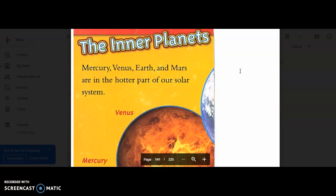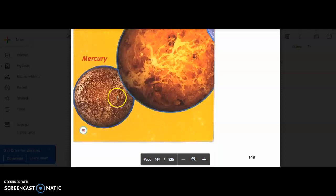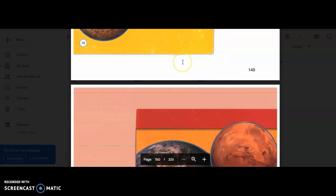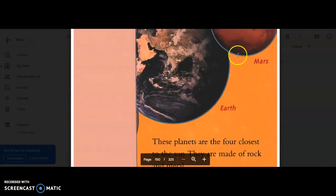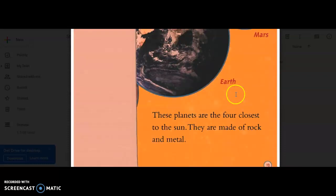Let's go ahead and go to page 12. This section is called the inner planets. This is the heading of this section. Mercury, Venus, Earth, and Mars are in the hotter part of our solar system. So this is another illustration of Mercury and Venus, and I think that might be Earth right there. It is. So there's Earth and Mars. These planets are the four closest to the sun. They are made of rock and metal.